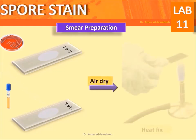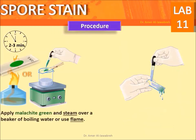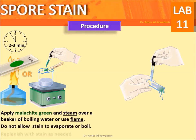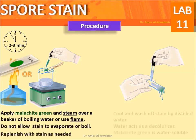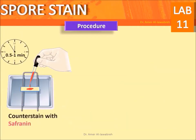Procedure: Air dry the smear, then heat-fix by quickly passing the slide two times over the flame. Apply malachite green and steam over a boiling water bath for three minutes. Do not allow the stain to evaporate or boil; replenish with stain as needed. Cool, then wash off the stain with distilled water, which acts as the decolorizer, as malachite green is water soluble.